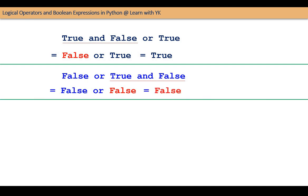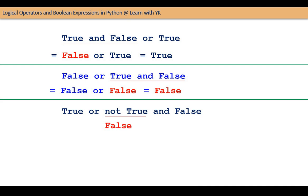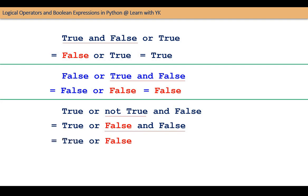Here is our next example. This expression involves all three logical operators NOT, AND, and OR. As NOT has the highest priority, NOT true will be evaluated first. NOT true is false, so the expression becomes true OR false AND false. Now AND will be evaluated first, and the expression becomes true OR false, which is equal to true.